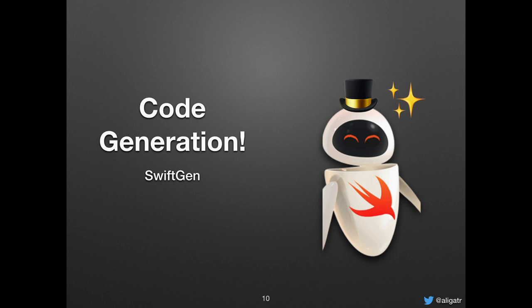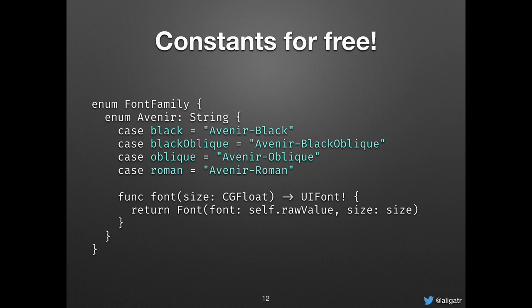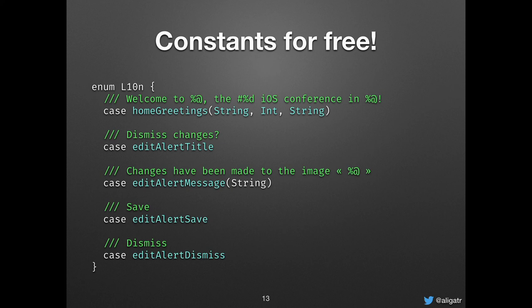SwiftGen is just a command line tool — you download it, install it, and run it in the terminal or in your build phase. It looks just like this: you put these commands in your build phase, and every time you build and run your project it generates all those constants for you. You don't have to type them, you don't have the risk of mistyping or misguessing font names. It does all of this for you. Even if you add fonts, it updates them because you use the build phase. And even more complicated stuff like parsing strings with parameters and placeholders can generate quite powerful structures.